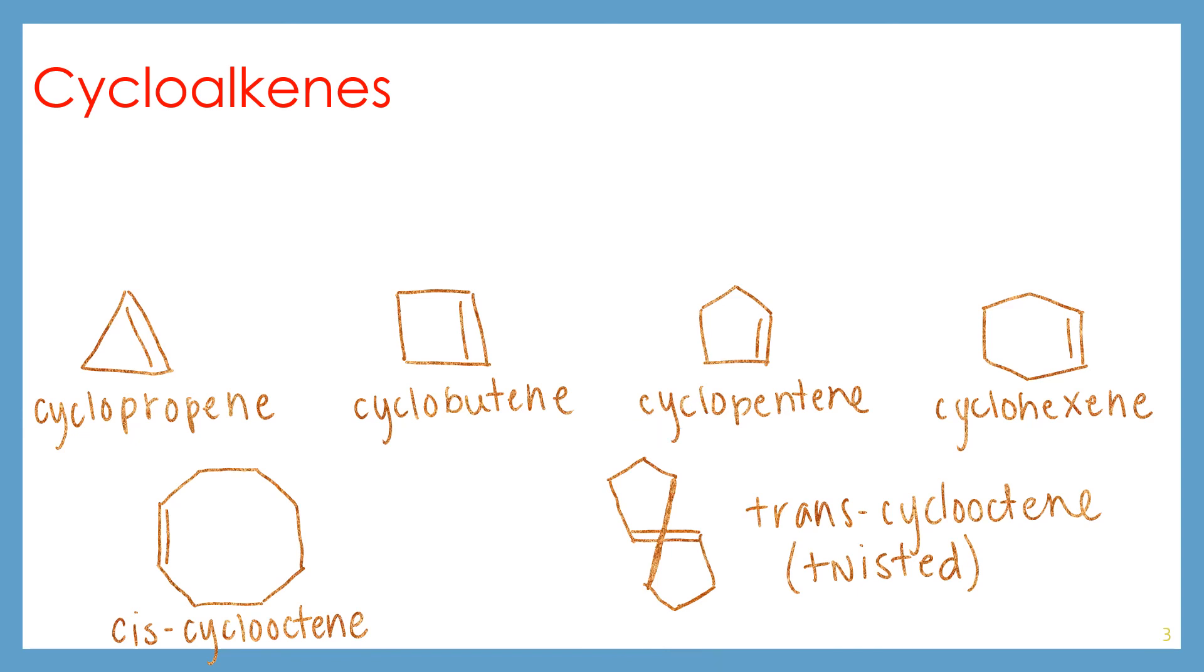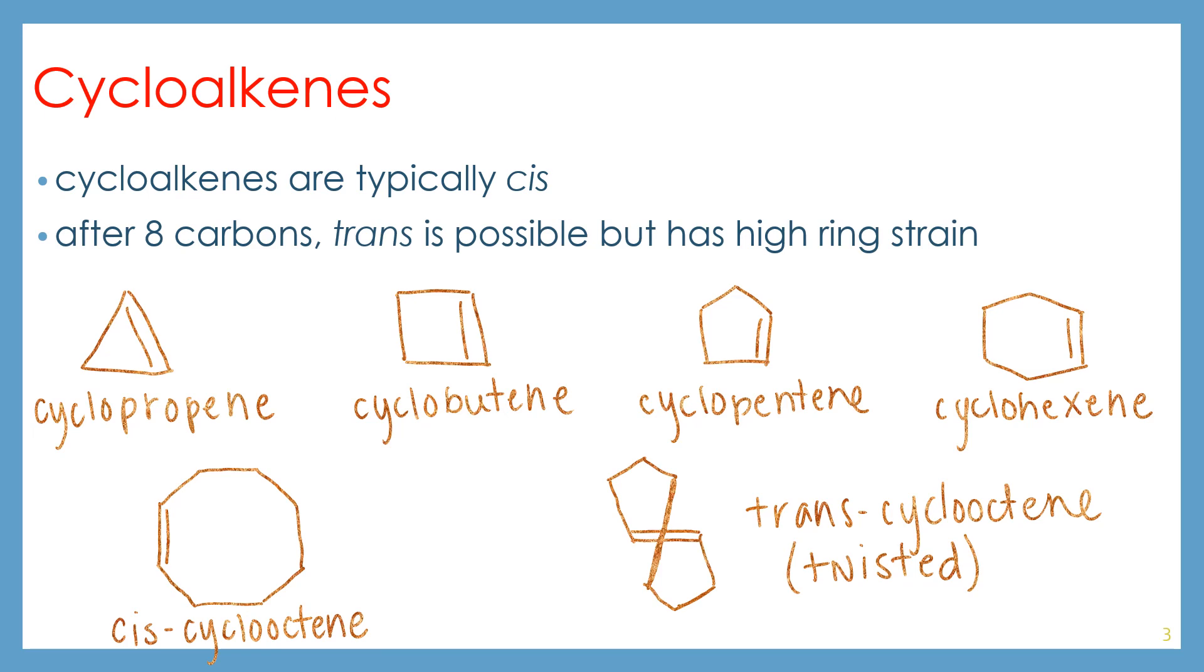But for the most part, it's pretty safe to assume that your cycloalkenes that you're dealing with, especially since we're going to focus largely on pentene and hexene sized things, they're typically cis.